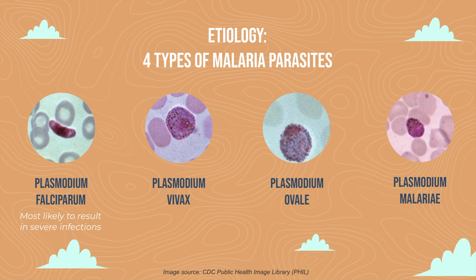There are four kinds of malaria parasites that infect humans: Plasmodium falciparum, Plasmodium vivax, Plasmodium ovale, and Plasmodium malariae. P. falciparum is the type most likely to result in severe infections and may lead to death if not treated promptly.